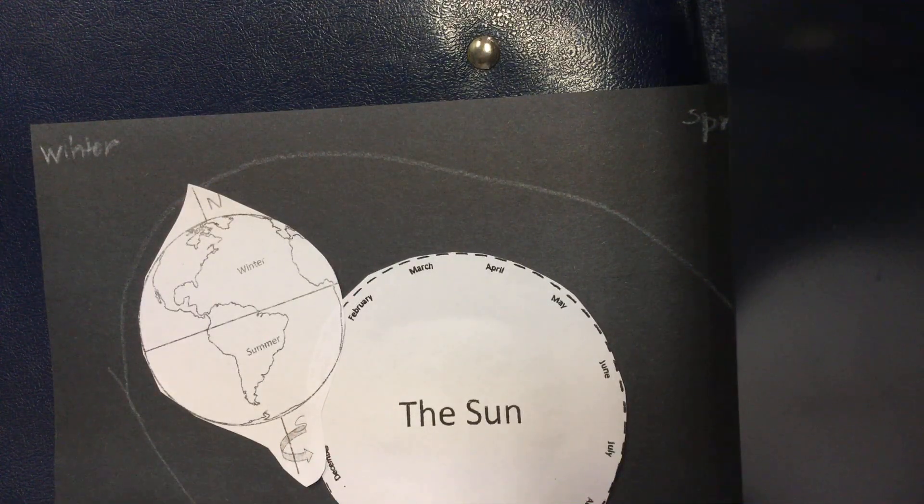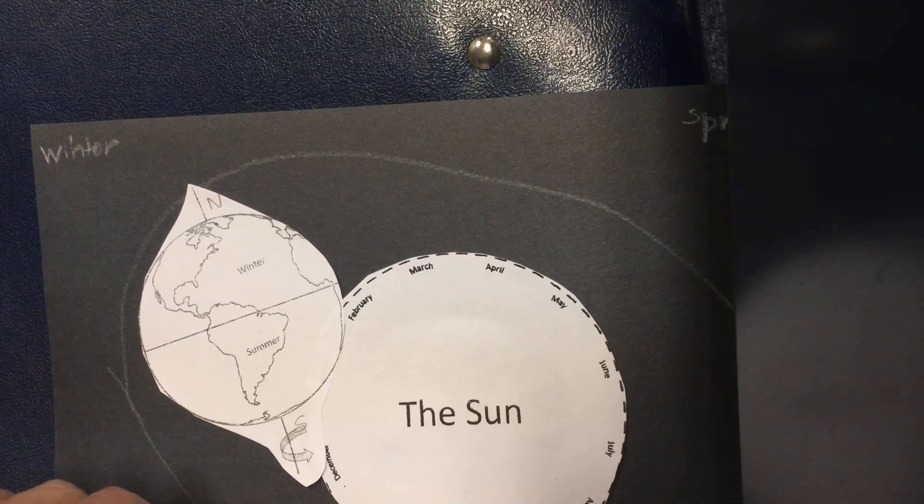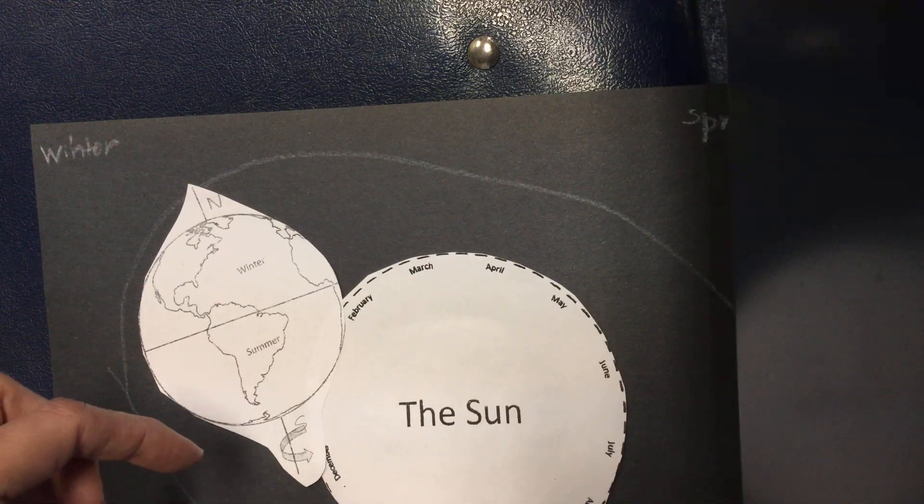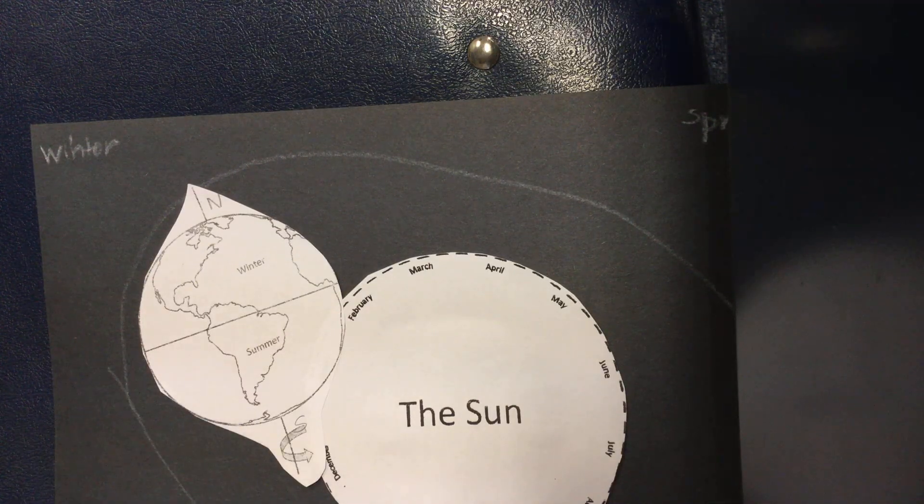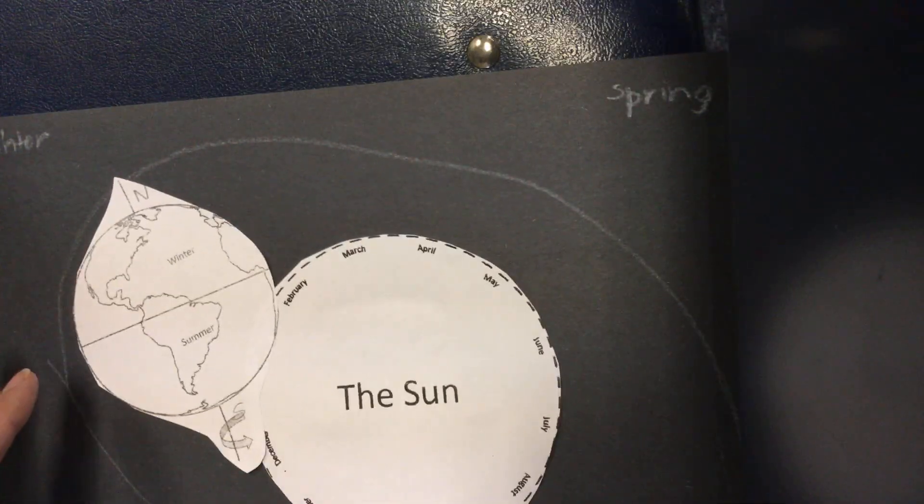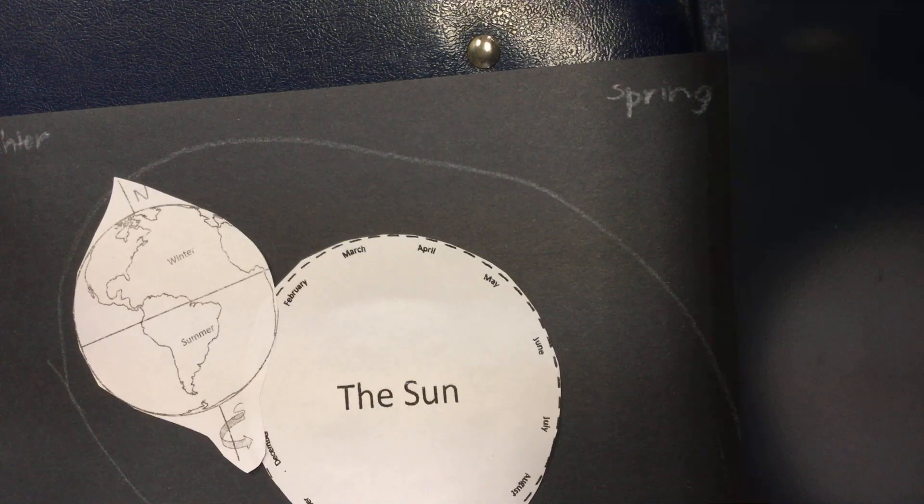Remember, always as the Earth is revolving, it is also rotating. Rotation causes day and night. It causes the Earth—for us on Earth to seem like the sun rises in the east and sets in the west. But our revolution of our Earth, the trip around the sun that takes 365 and one-fourth days, causes our seasons, and I'm going to show you why that is.